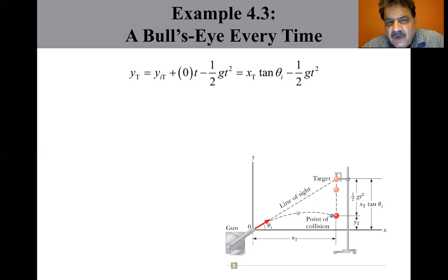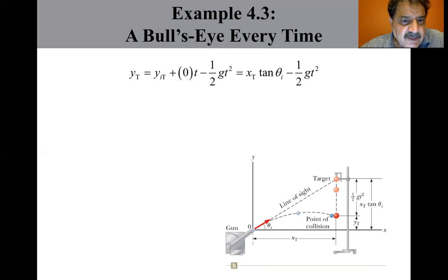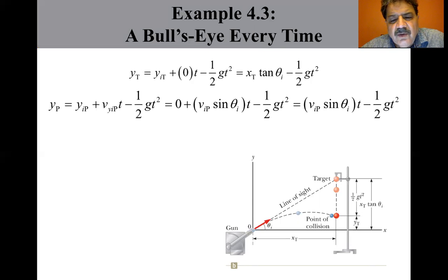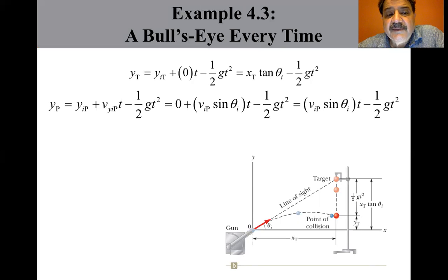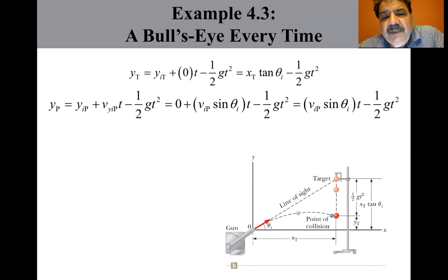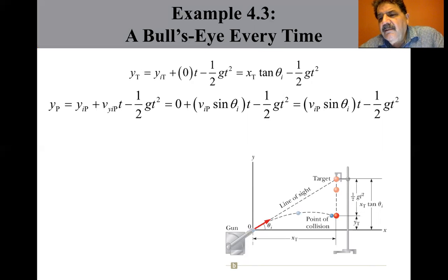Now write an expression for the Y coordinate of the projectile. Y of the projectile equals Y-initial of the projectile plus the initial Y component times T minus one-half G-T-squared. The Y-initial is zero, so this becomes V-I-P sine theta-I times T minus one-half G-T-squared. There's a zero T because V-initial is zero for the target — it's just a constant gravitational acceleration problem.